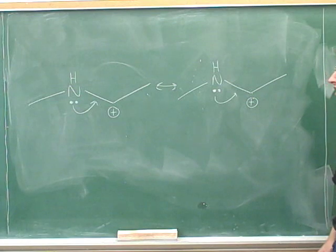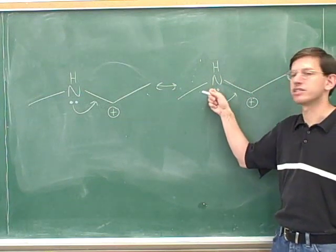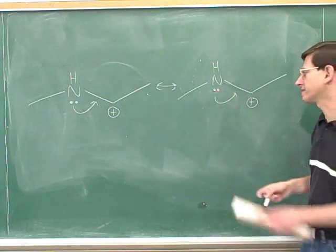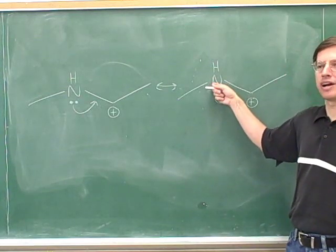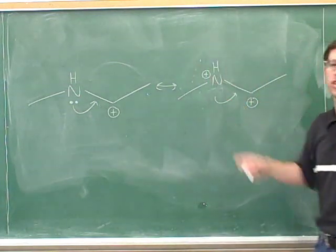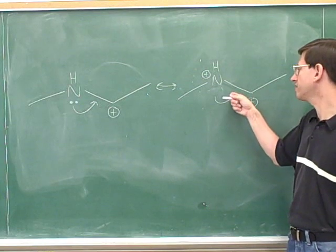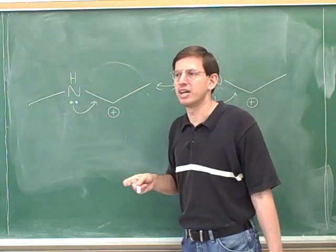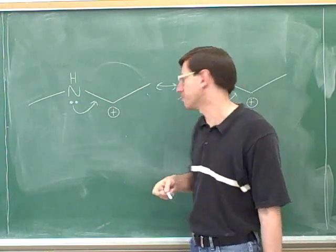Now we start modifying. Starting with the tail of the arrow: the tail is on the lone pair, so the electrons are coming from the lone pair — we erase it. That atom is losing its lone pair, so it becomes more positive; we put a positive charge on the nitrogen. Now, the head of the arrow is in the middle of the sigma bond. The convention is that when the head is in the middle of a sigma bond, that indicates you're forming a pi bond.